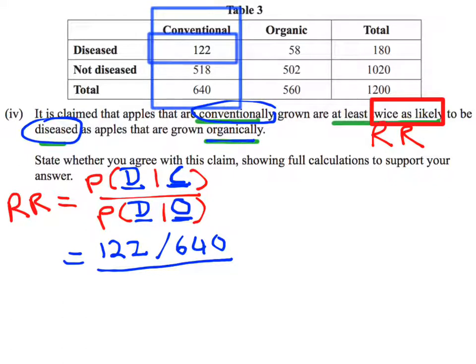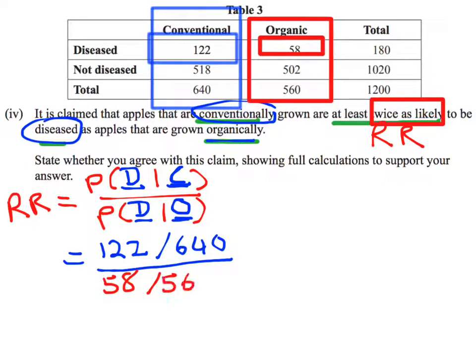Now I've got to work out the probability on the bottom. This one is the probability of a diseased apple given that we know it's organically grown. Now I'm looking at my organically grown apples, and again, I'm just interested in the diseased ones. We've got 58 organic apples that have a disease out of 560 organically grown apples.